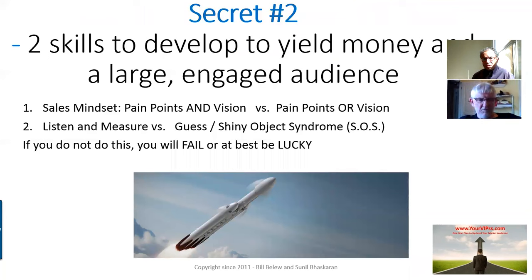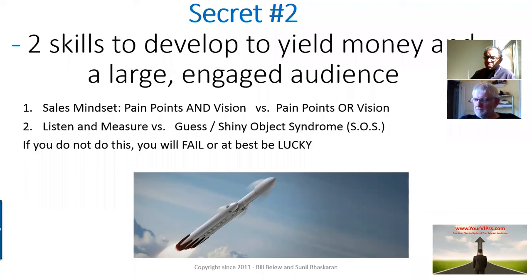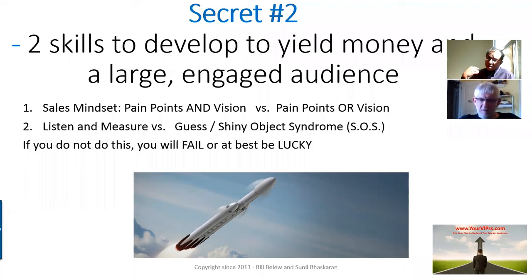Secret number two is to develop two key skills. There are actually about 17 skills we train people on in our program — probably more — but these are the two most important ones. If you don't develop these, it's very difficult to create a large and engaged audience of your ideal clients.